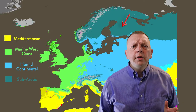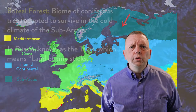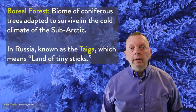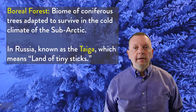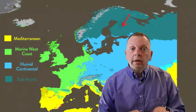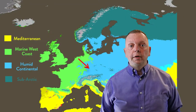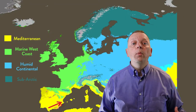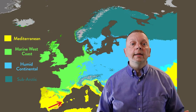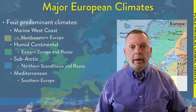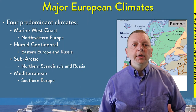In the northern parts of the Scandinavian Peninsula and northern Russia, we find a sub-Arctic climate with a boreal forest. In Russia, these boreal forests are known as the taiga, which literally means land of tiny sticks. If we go down to the southern portion of Europe around the Mediterranean Sea, we get a climate that is actually named after it — the Mediterranean climate.